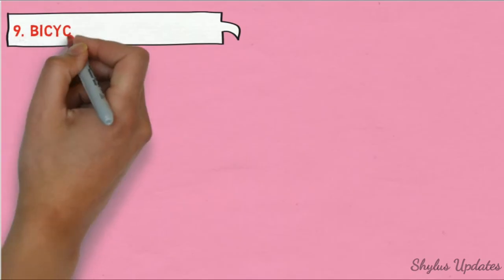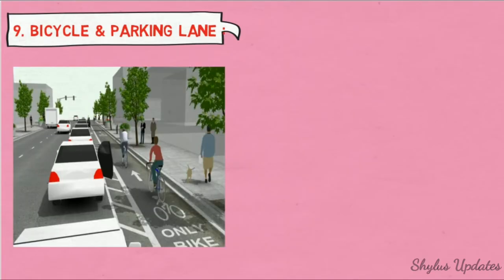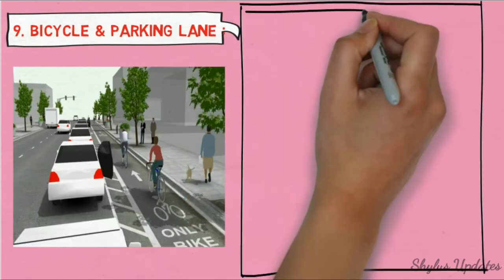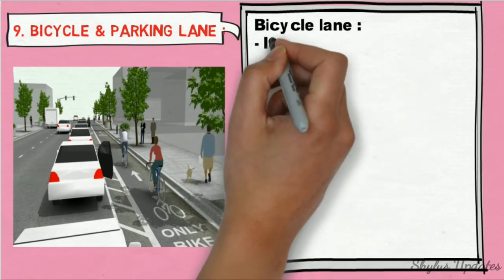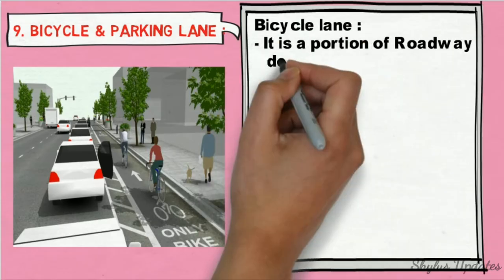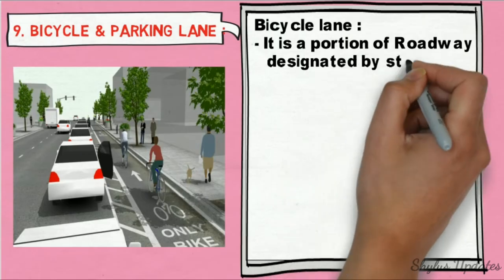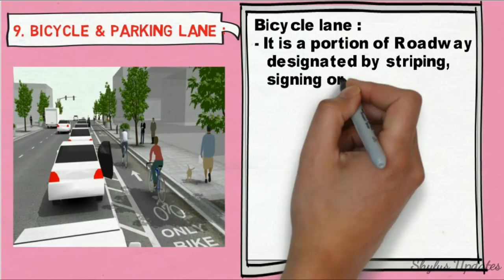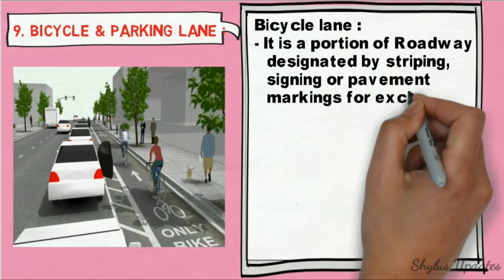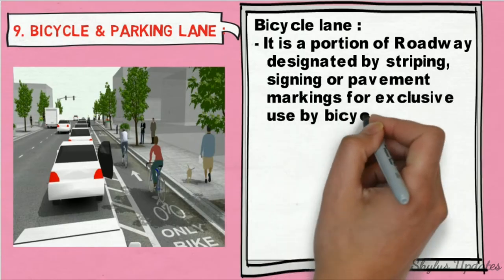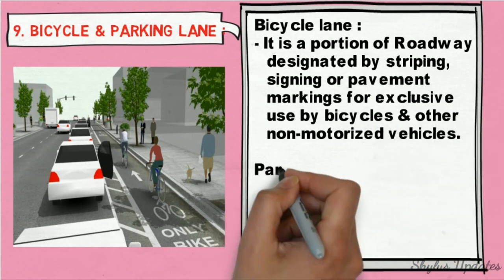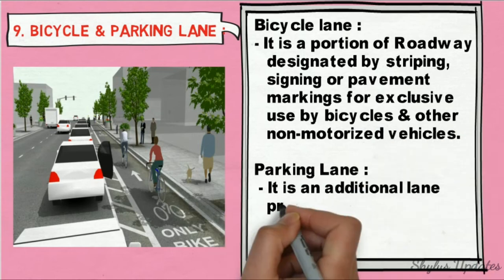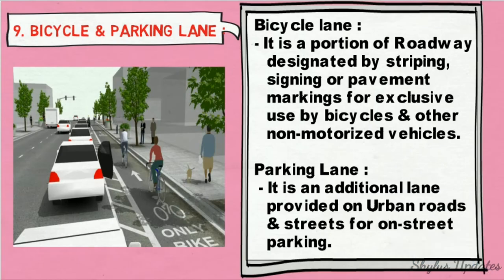Bicycle and parking lanes. Bicycle lane: it is a portion of roadway designated by striping, signing, or pavement markings for exclusive use by bicycles and other non-motorized vehicles. Parking lane: it is an additional lane provided on urban roads and streets for on-street parking.